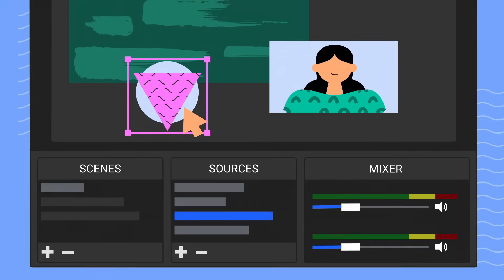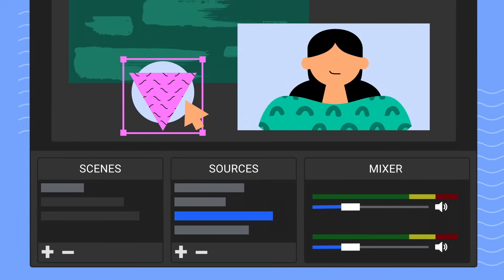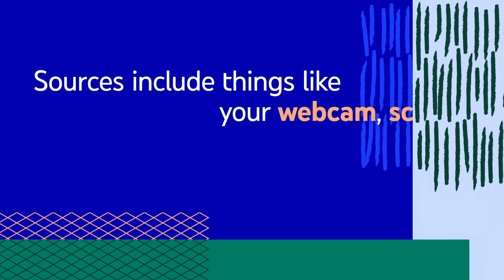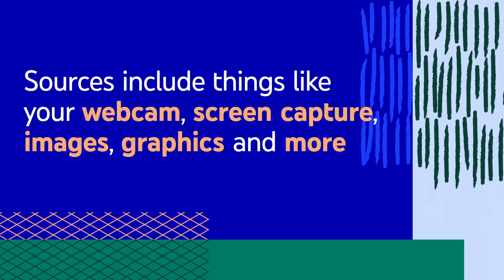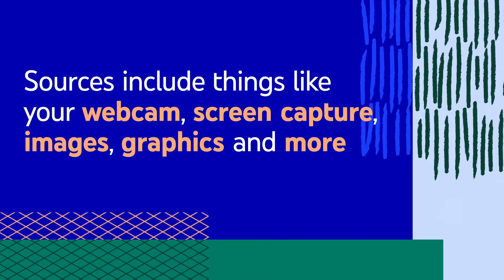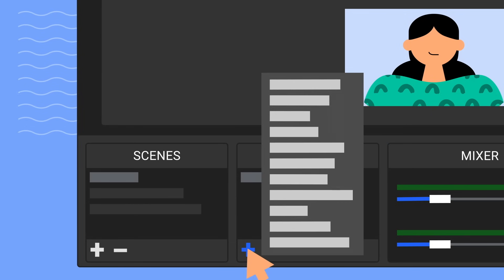Scenes are made up of one or more media assets that appear to your viewers, and these assets are called sources. So your next step is to add sources. Any content you choose to display to your viewers would be considered a source within a scene, layout, or shot. This could be things like your webcam, your screen capture like the video game you're streaming, images, graphics, and more. Press the plus symbol to add your new source.